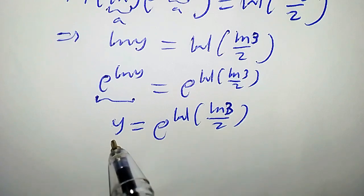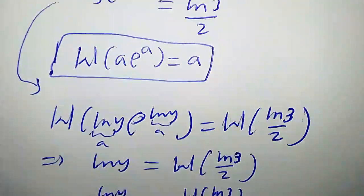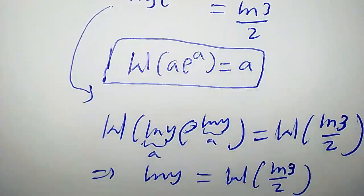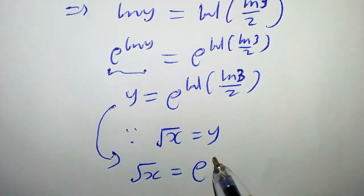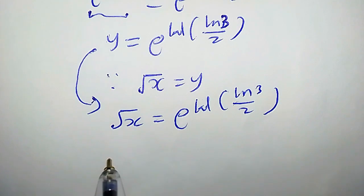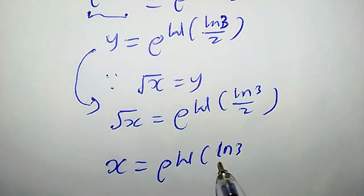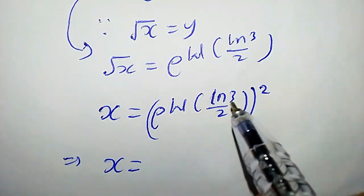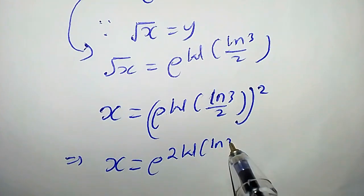Our aim is to find the value of x, but we have y here. Since square root of x equals y, this becomes square root of x equals e^(W(ln(3)/2)). Squaring both sides, x equals e^(W(ln(3)/2)) all squared, which implies x equals e^(2·W(ln(3)/2)).